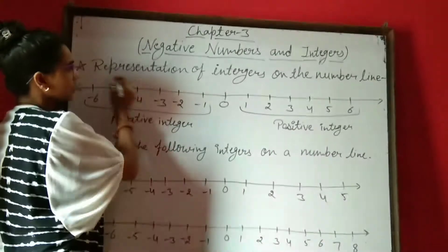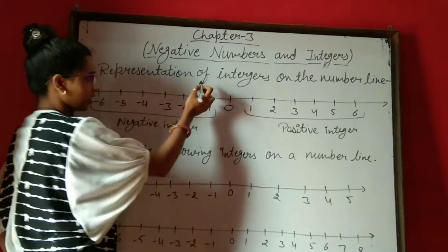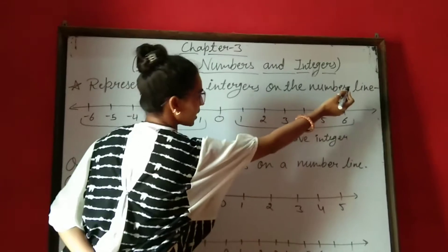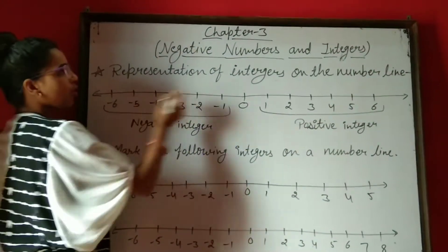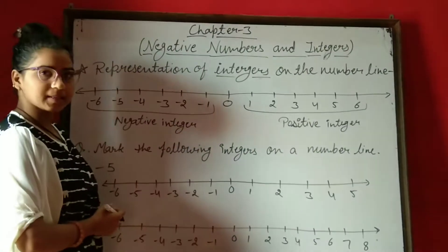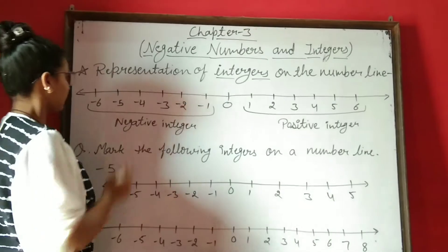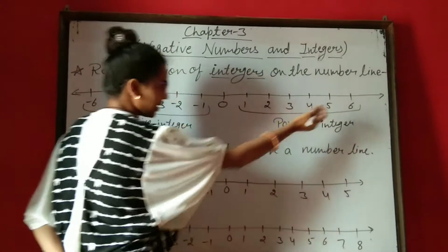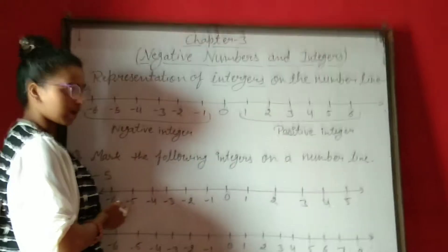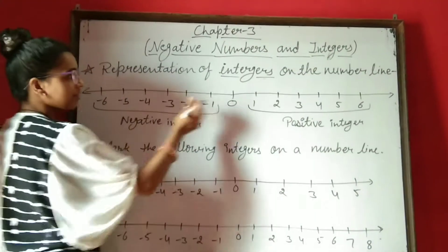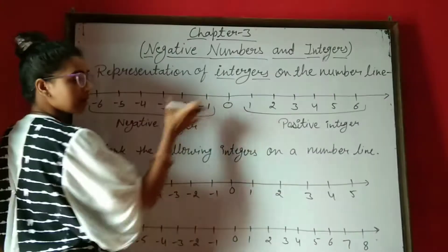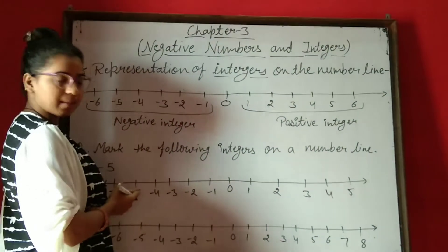Next topic is representation of integers on the number line. Means आपको integers को एक number line पर represent करना है. First, we draw a line. Then we mention positive and negative integers on this number line.